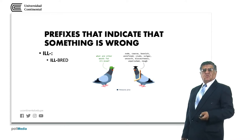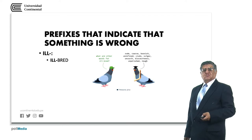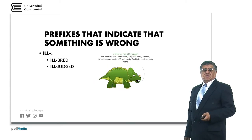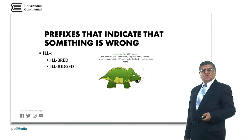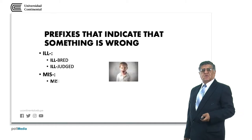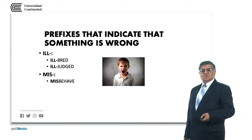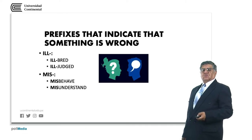If you pay attention to the picture, some words will give you more explanation and clarify the definition of ill-bred — referring to somebody or something that has not good behavior, is bad-mannered, and so on. Ill-judged means that something was judged in a bad way, not correctly judged. Mis- as in misbehave means to behave in an incorrect form. Misunderstand means to understand something in an incorrect way.